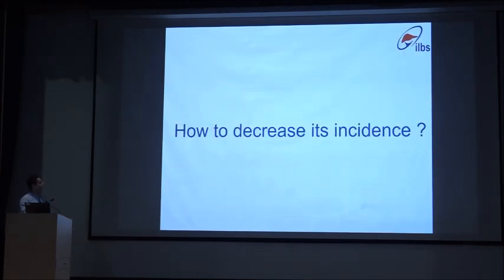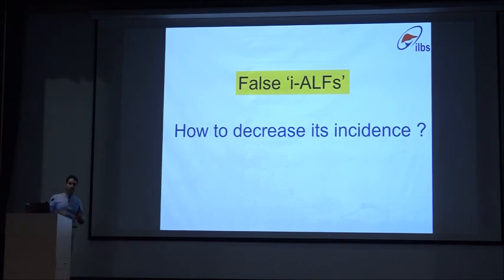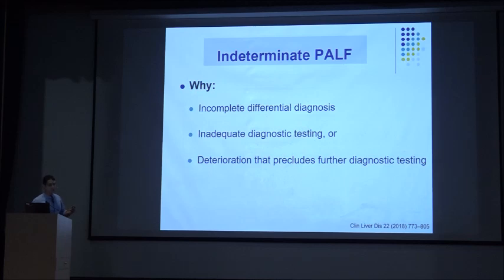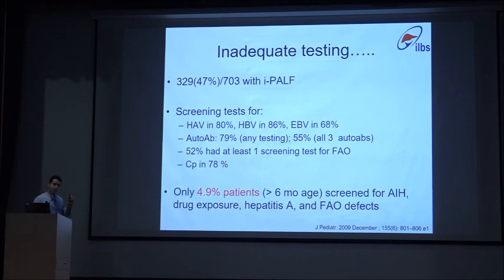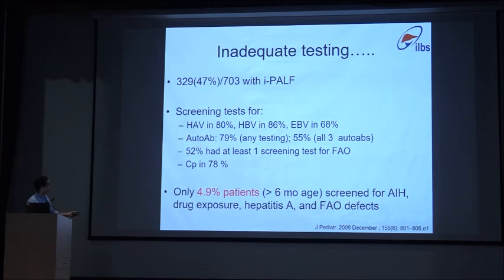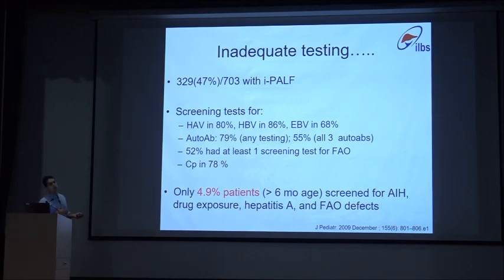How can you decrease the incidence of indeterminate ALF? Let me call them false indeterminate ALFs — it is our fault for not putting up a good differential diagnosis or not doing proper diagnostic testing. The ALF study group showed that 20 percent of patients were not tested for hepatitis A, about 20–30 percent were not tested for autoantibodies, the majority did not have metabolic screening, almost one fourth were not tested for Wilson's, and only 5 percent were screened for all of them together.